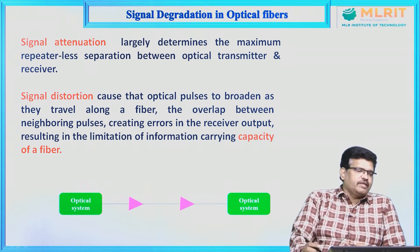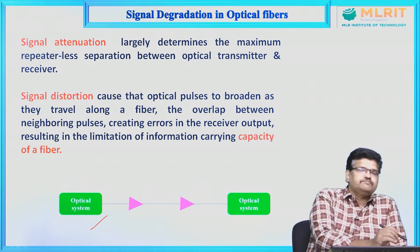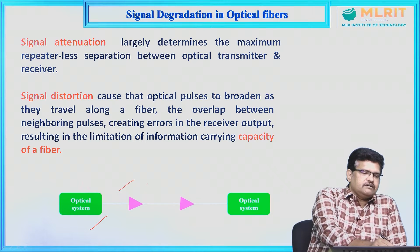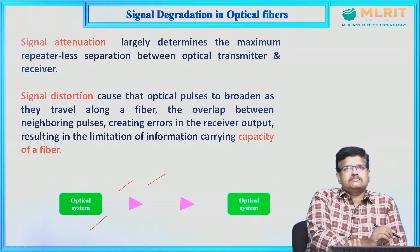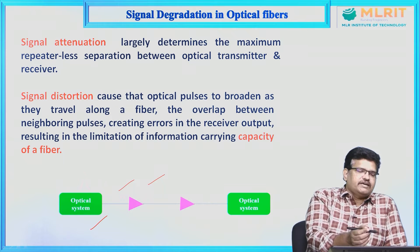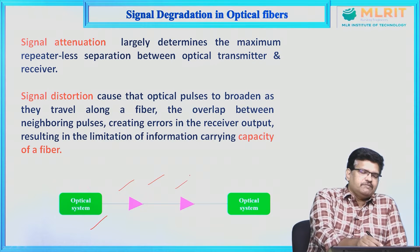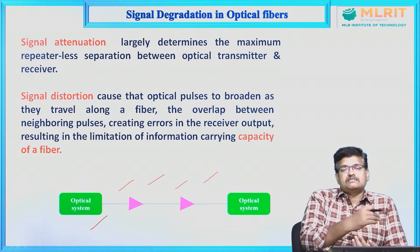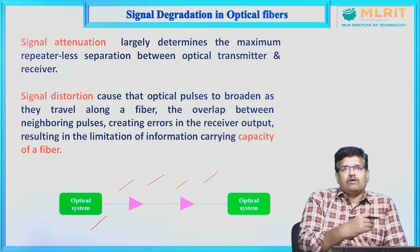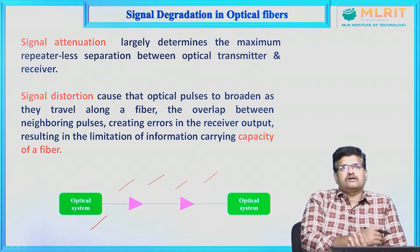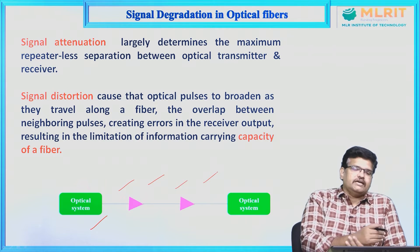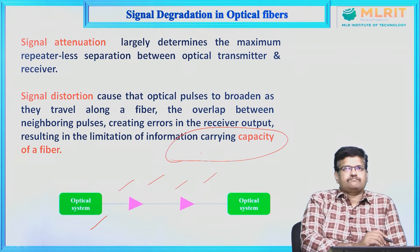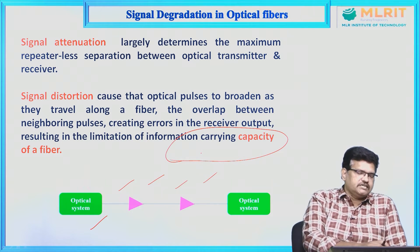In the optical system, it provides some pulses, and we can go for amplification in many stages. But the overlapping of these pulses will cause signal distortion. This affects the information capacity of the fiber — that is signal distortion.